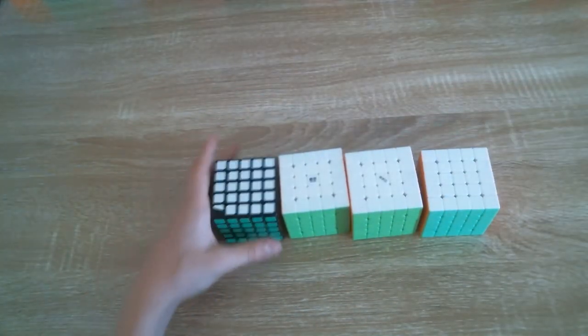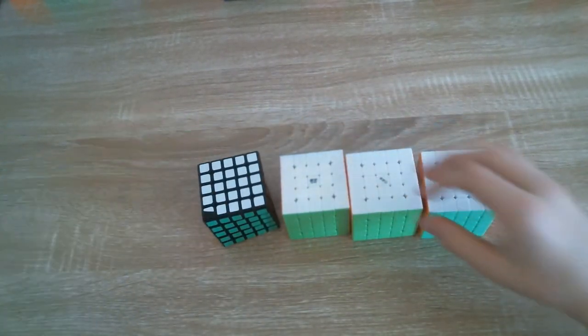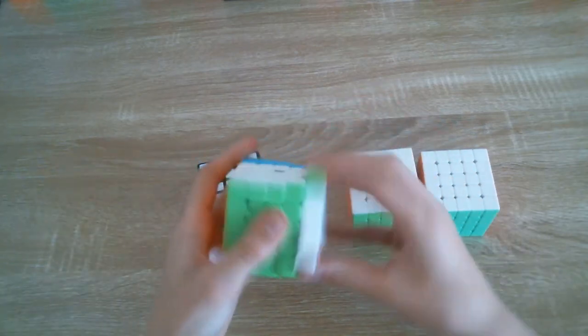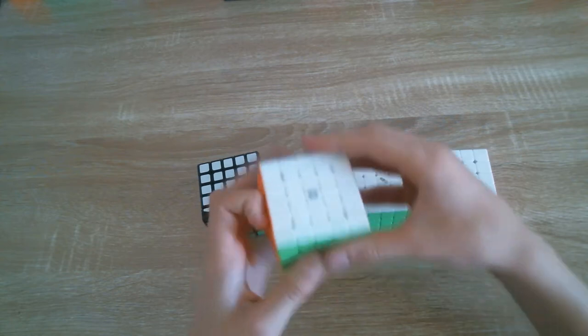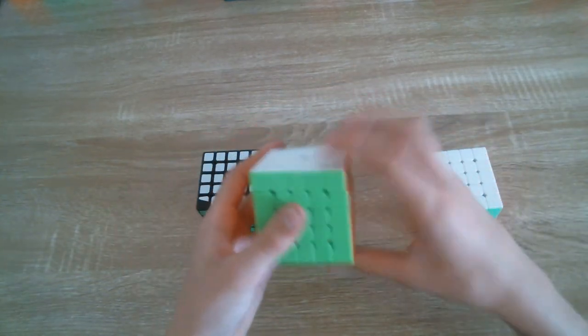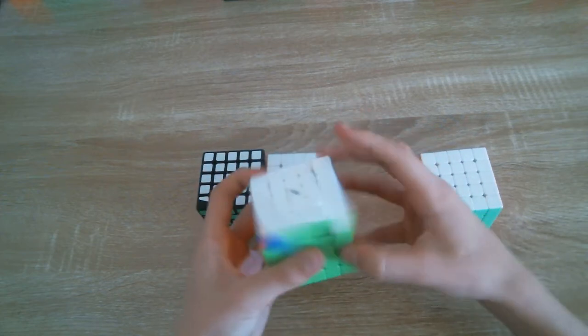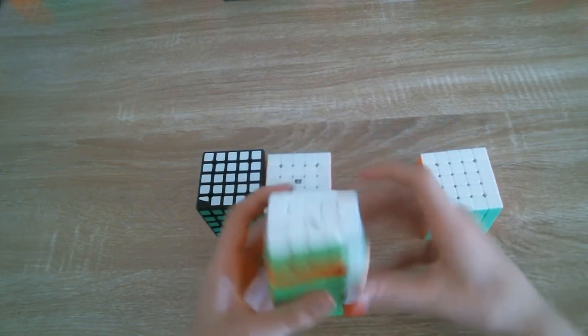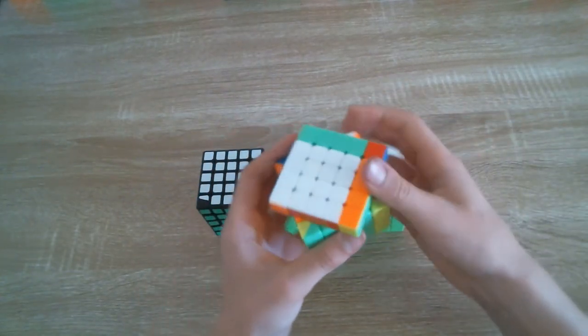5x5s. I have a YJ Guanlong which is like 13 bucks and really bad. A Qiqi Qijun which is also like 13 bucks and you can tell. The Qi EMF which I think is the cheapest 5x5 that could be used at world class levels. Like this is really good. And finally the YJ MGC which is my main.